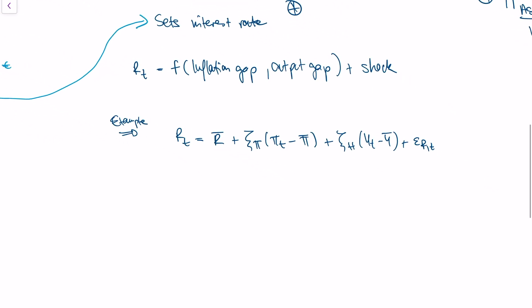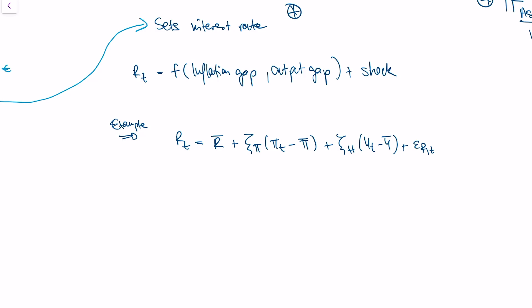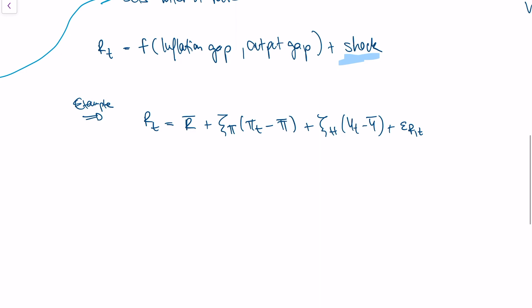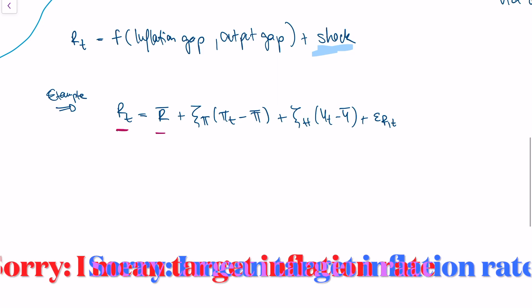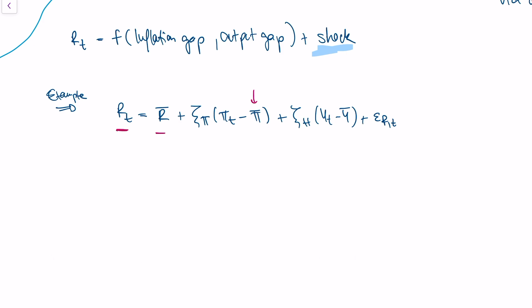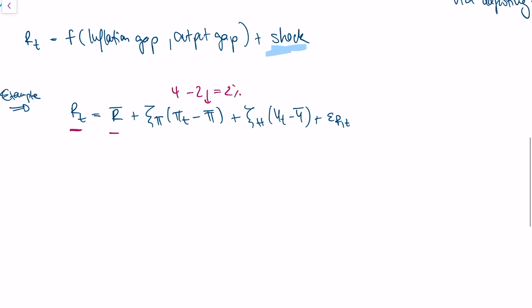This interest rate is set by a certain rule. This rule is that the central bank cares about the inflation gap, the output gap, and there's sometimes a shock to the interest rate. I'll give you a certain example. Here is an example of how a central bank could set the real interest rate R_t. We have a baseline interest rate, which is r-bar, and then we have our deviation from the target interest rate. The ECB has a target interest rate of 2%. So if my inflation in the economy is at 4%, then I will set a higher interest rate because 4 minus 2% is 2%.